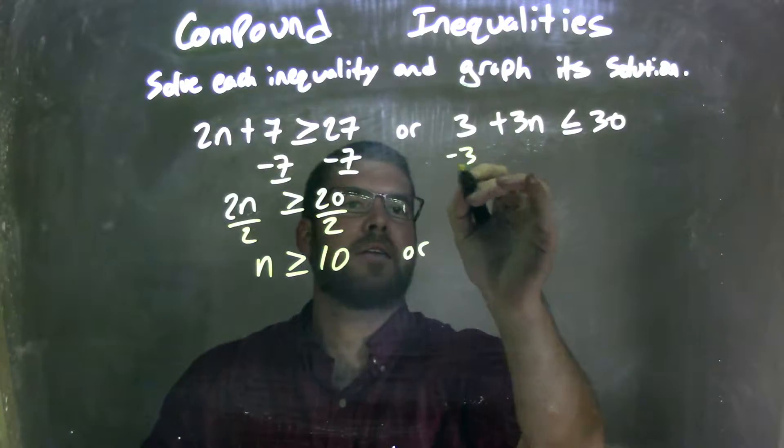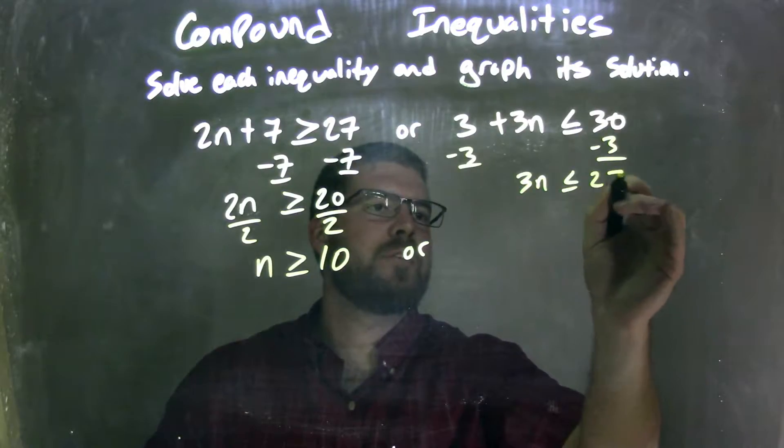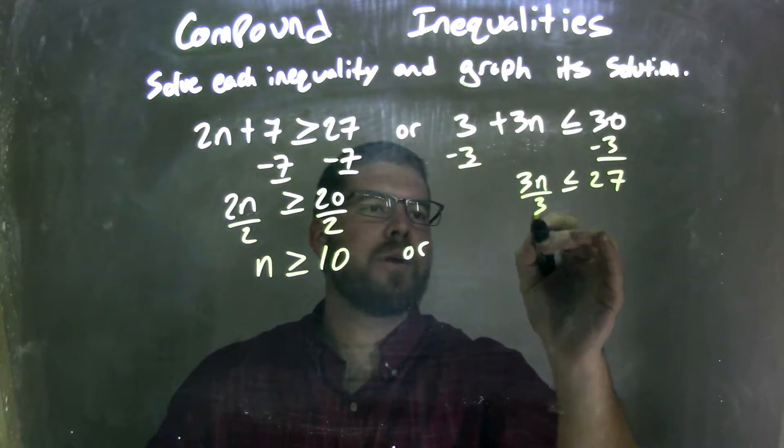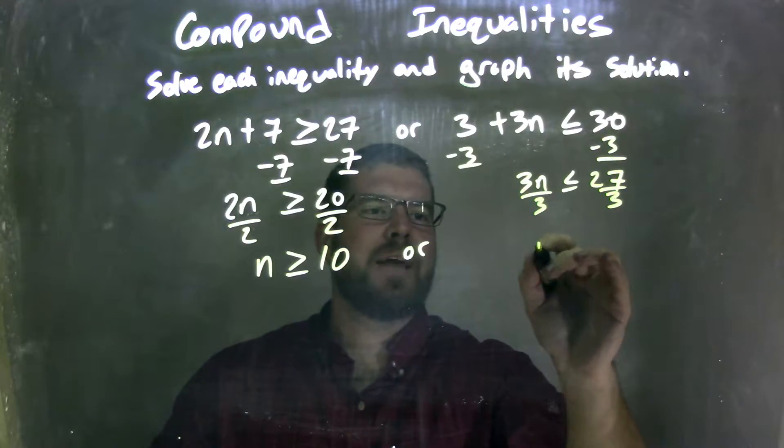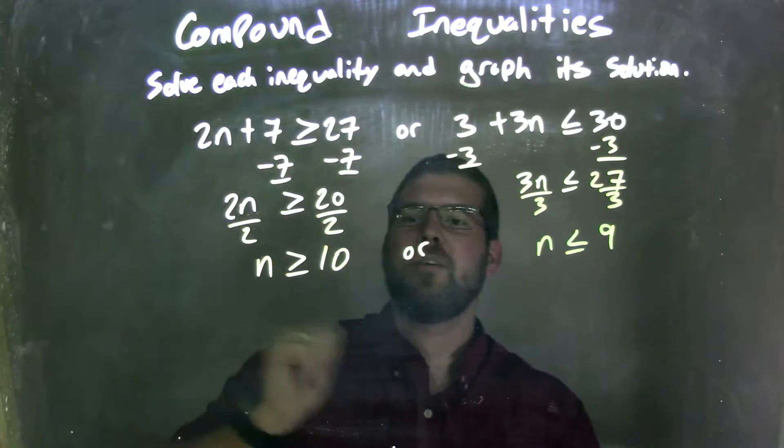Or, solve the other one. I subtract 3 from both sides, giving me 3n is less than or equal to 27. I then divide by 3 on both sides here, giving me n is less than or equal to 27 divided by 3 being 9. So now I have our two parts.